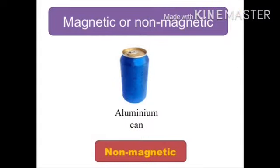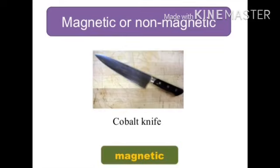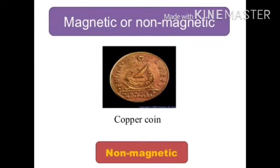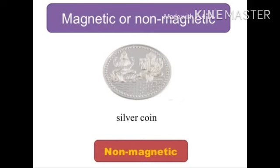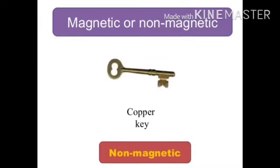Let us check whether each substance is magnetic or non-magnetic. An aluminum can is non-magnetic. A knife made of cobalt is magnetic — it is attracted towards the magnet. A copper coin is made of metal but is non-magnetic — it is not attracted towards the magnet. A silver coin is also a metal but non-magnetic. A copper key is a metal but non-magnetic — it cannot be attracted towards the magnet.